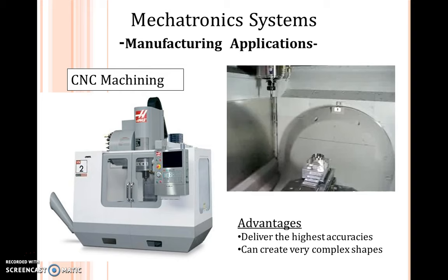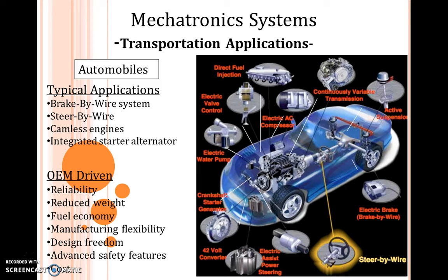CNC machining gives the highest accuracy, and in the demanding world we can create very complex shapes and dimensions. The basic application of mechatronics nowadays is in automobiles, where mechanical components are step by step either assisted by electronics or directly altered by electronics — for example, the brake-by-wire system. The ABS braking system is totally controlled by electronics. The steering mechanism, also called power steering, can be made effortless using electronics. The inlet and outlet ports, now controlled by camshafts, can also be controlled with sensors and timers, thus enabling camless engines.